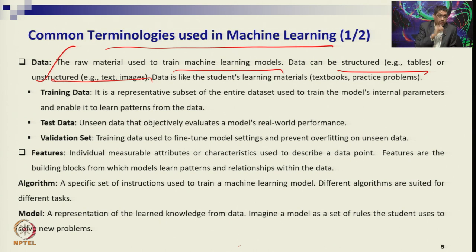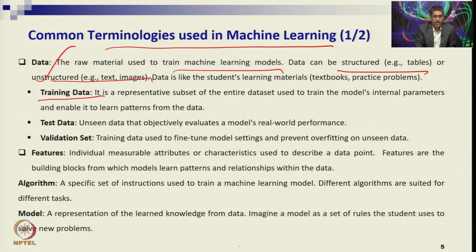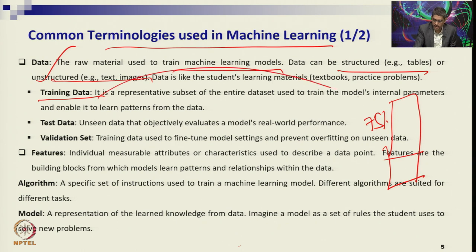Once you get the data, the machine learns and trains based on a developed algorithm. The computer understands the data pattern, but for that it needs some initial data — we call this training data. Suppose you have a dataset; you keep around 75% as training data. Based on that, the model is developed — the pattern is learned — whether it is supervised, unsupervised, classification, clustering, random forest, or decision tree.